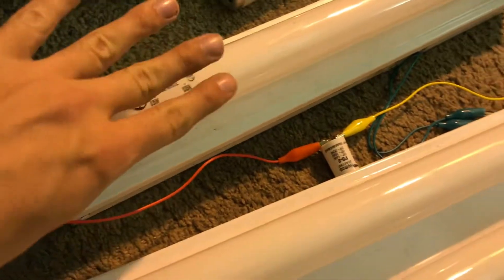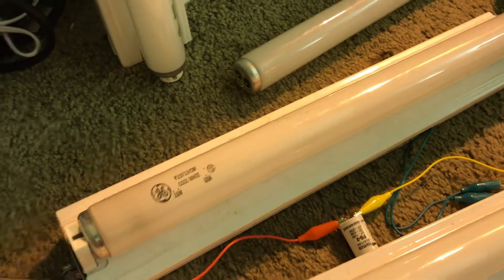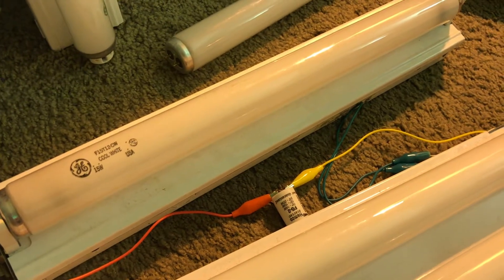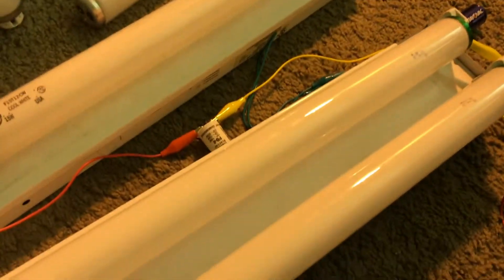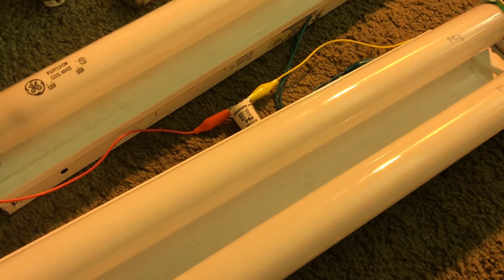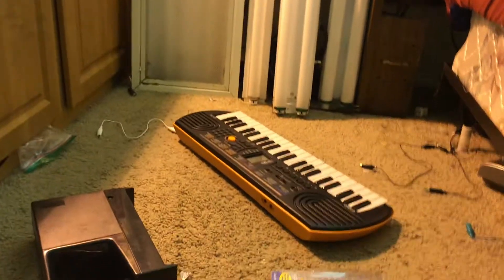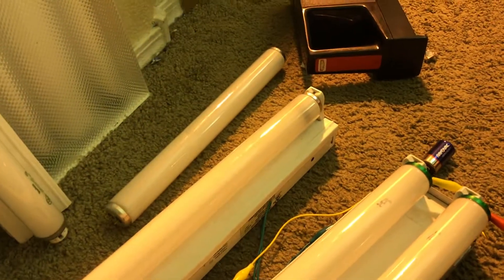This will also work on a single lamp fixture. Just the only difference is that it takes one bulb. And I tested this on an F30 T12 and the results were good. I tried it on an F40 T12 on my single lamp strip right there. It would not strike the lamp. It would just behave like, if you're familiar with preheat fluorescent lights,